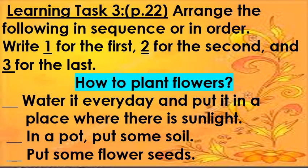Learning Task 3. Arrange the following steps in sequence or in order. Write 1 for the first, 2 for the second, and 3 for the last. How to plant flowers: Water it every day and put it in a place where there is sunlight. In a pot, put some soil. Put some flower seeds.